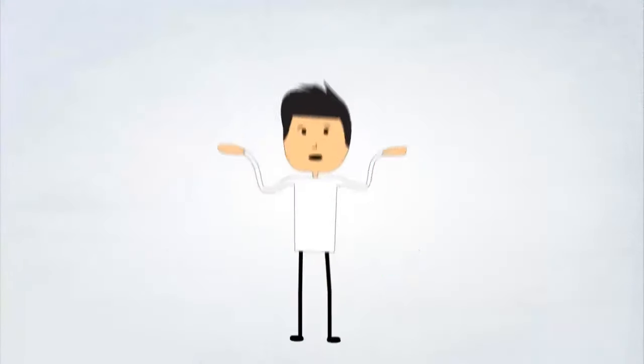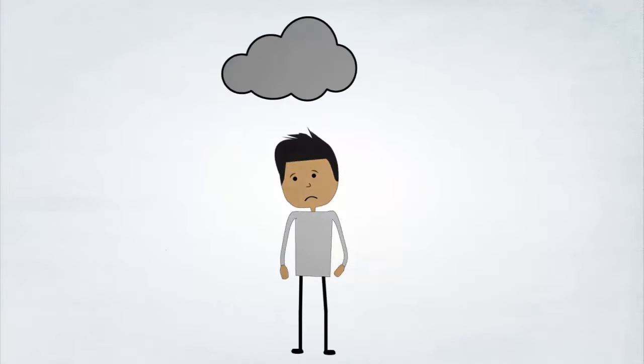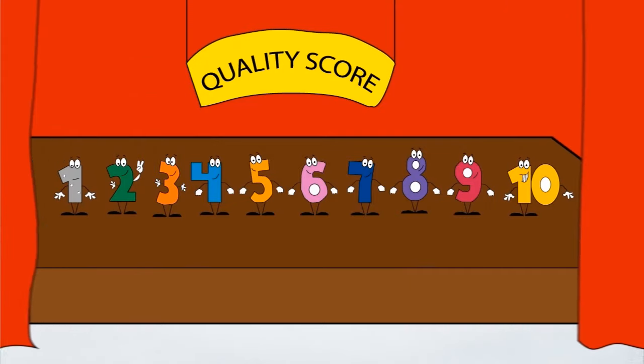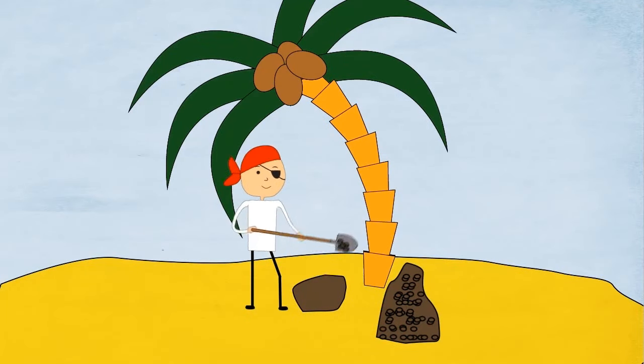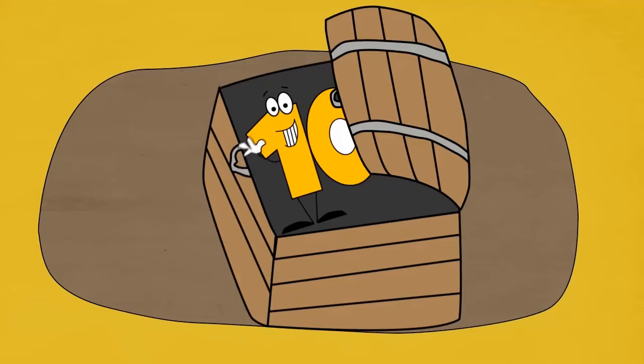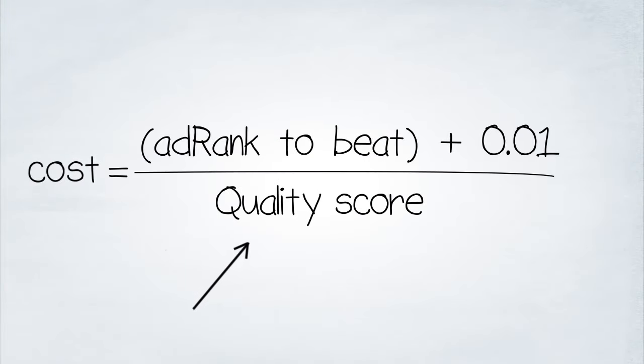Well, it doesn't happen that way most of the time. One of the reasons it doesn't is because of a little number in AdWords called Quality Score. Most people don't even know about it because it's hidden by default. You need to hunt it down and find it. That little number influences how much you pay for each click.